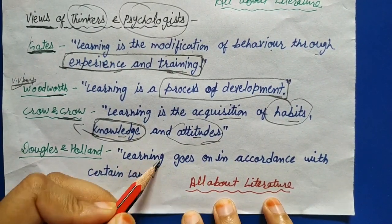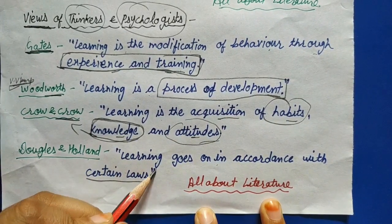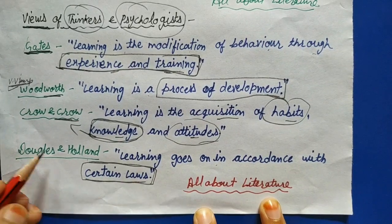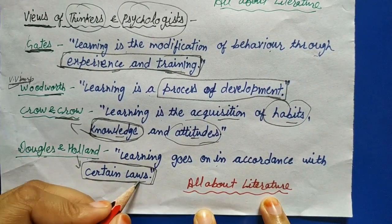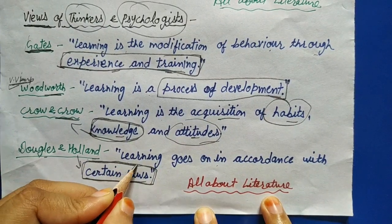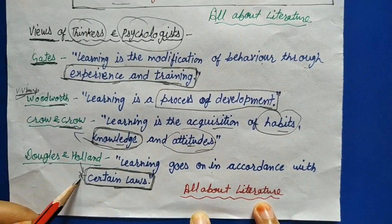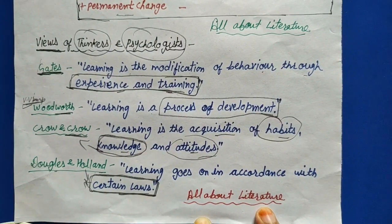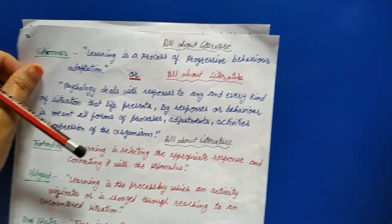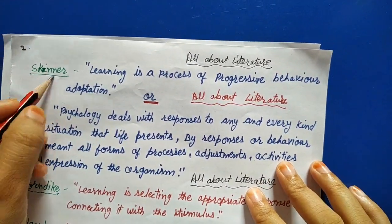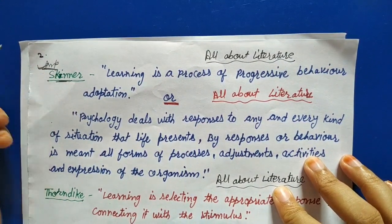Then Douglas and Holland say: 'Learning goes on in accordance with certain laws.' The key hint here is certain laws. Douglas and Holland emphasize that laws are important in the process of learning.